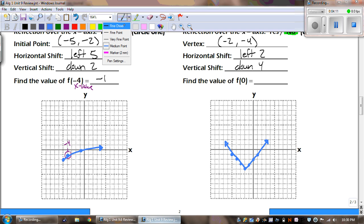So this time we have to find f of 0. So when x is 0, what does it equal? And it equals negative 2.